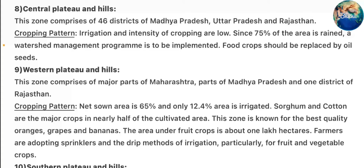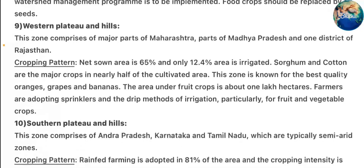Zone 9 – Western Plateau and Hills: This zone comprises major parts of Maharashtra, parts of Madhya Pradesh, and one district of Rajasthan. Cropping pattern: net zone area is 65% and only 12.4% area is irrigated. Sorghum and cotton are the major crops in nearly half of the cultivated area. This zone is known for the best quality oranges, grapes, and bananas. The area under fruit crops is about 1 lakh hectares. Farmers are adopting sprinkler and drip methods of irrigation, particularly for fruit and vegetable crops.